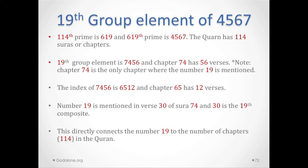The index of composite 7456 is 6512, and chapter 65 has 12 verses. Number 19 is mentioned with verse 30 of chapter 74, as shown in the previous slide, and 30 happens to be the 19th composite.